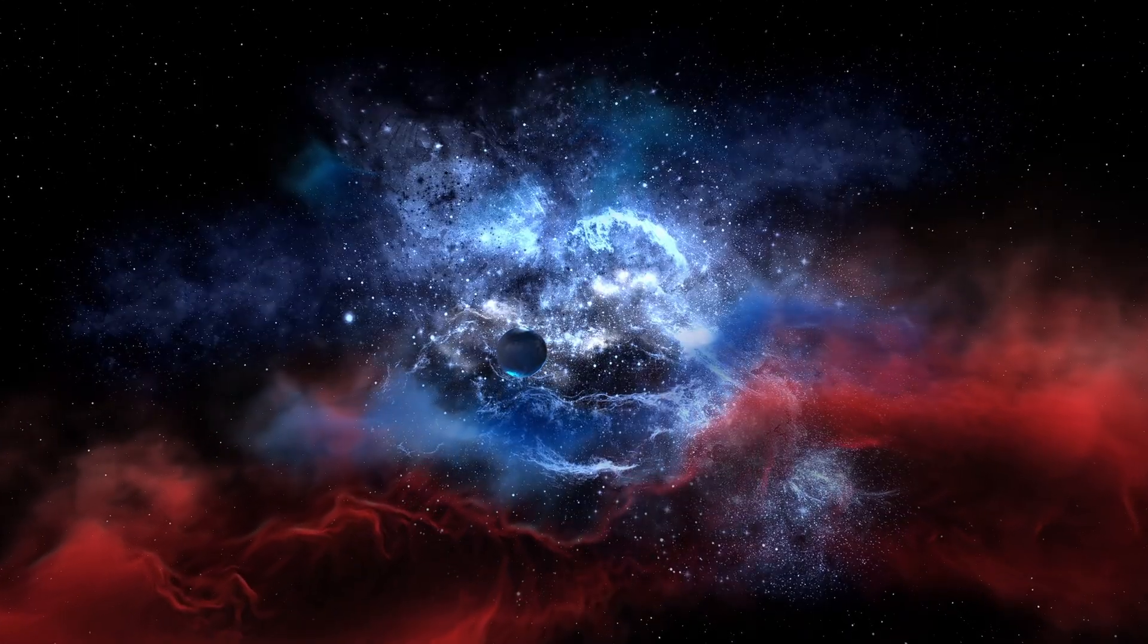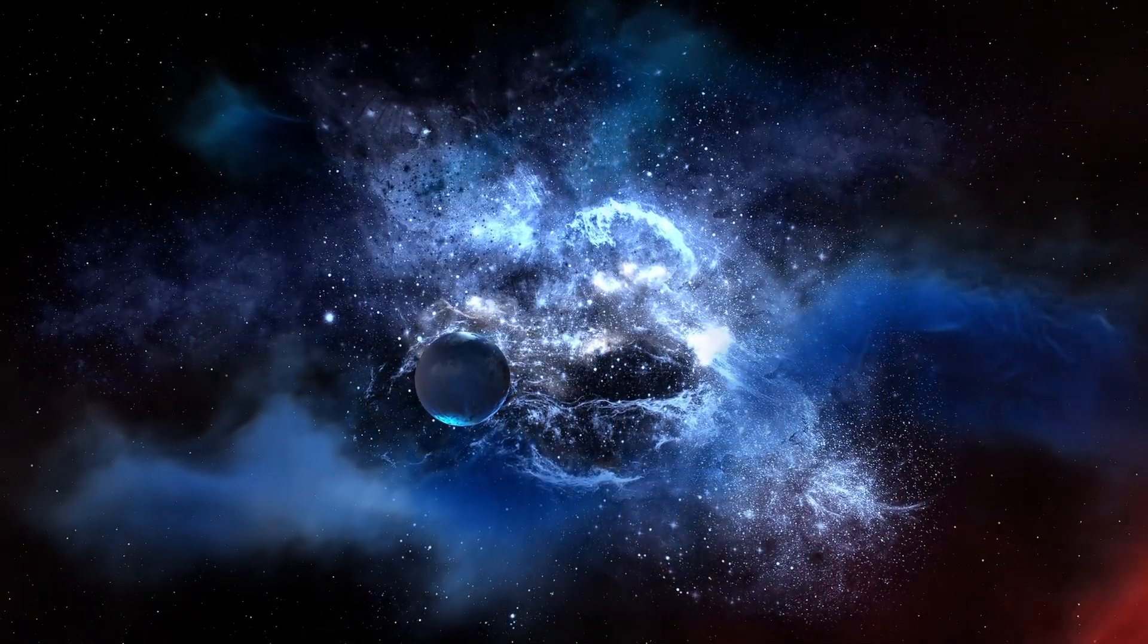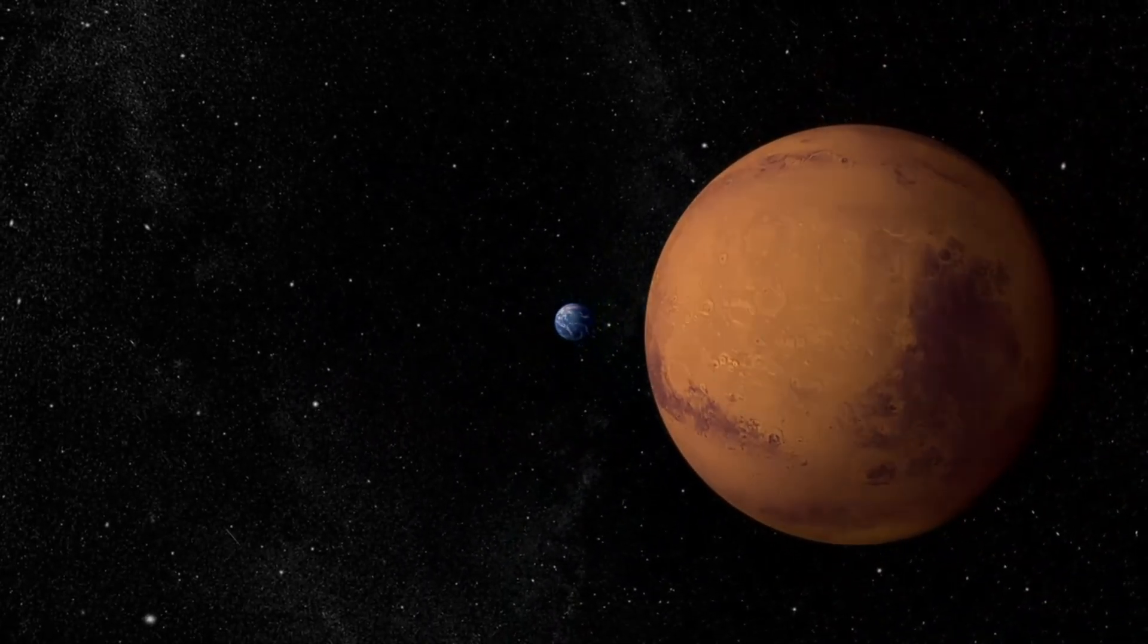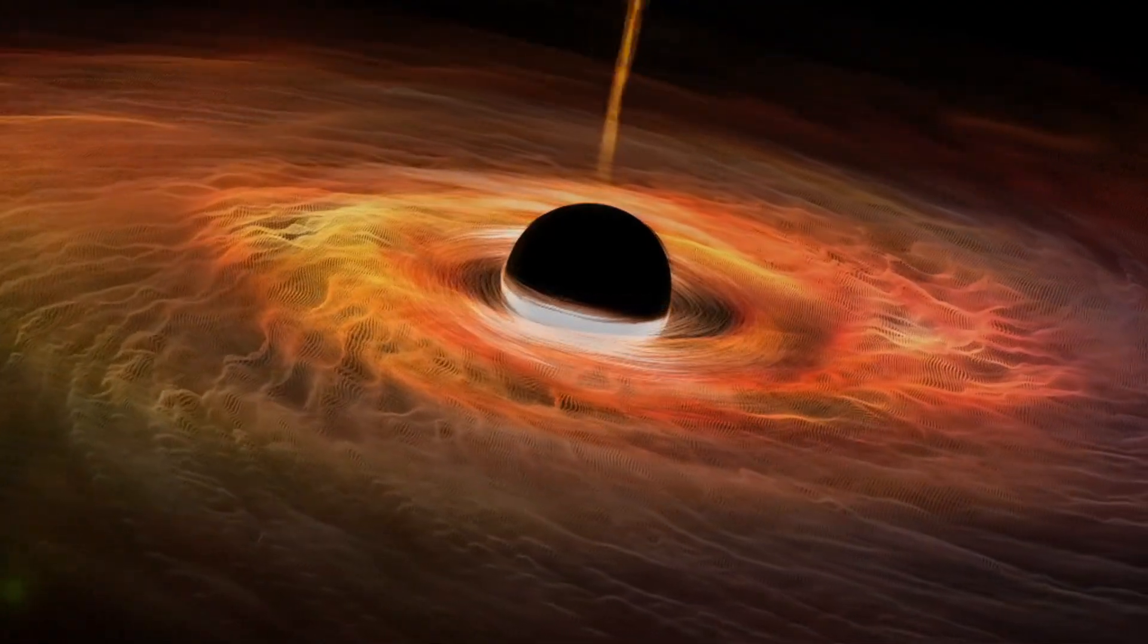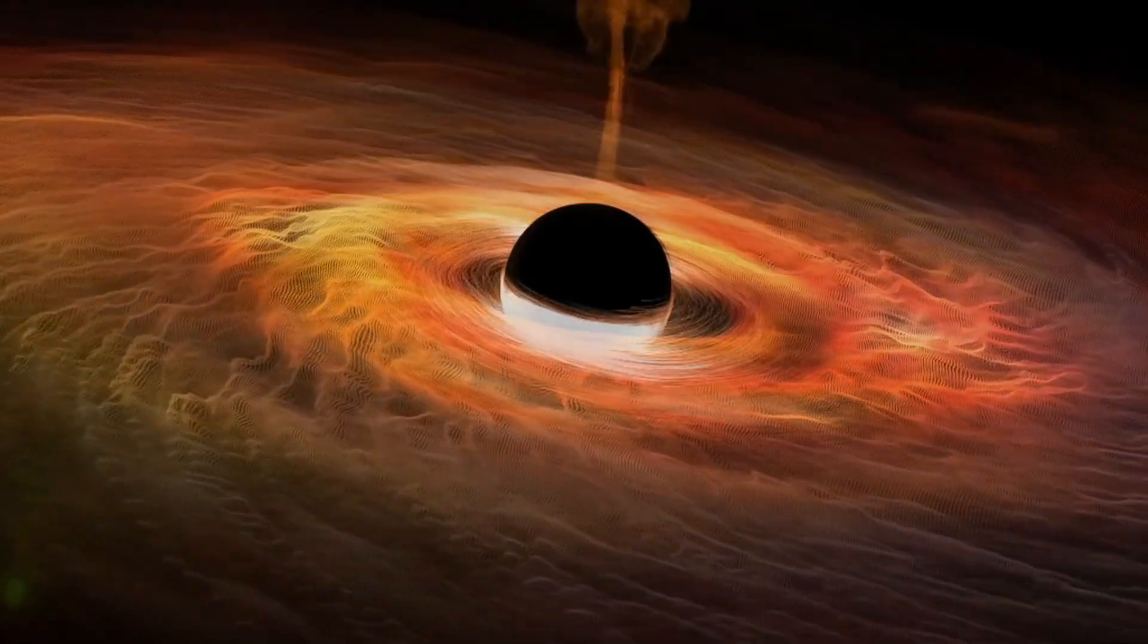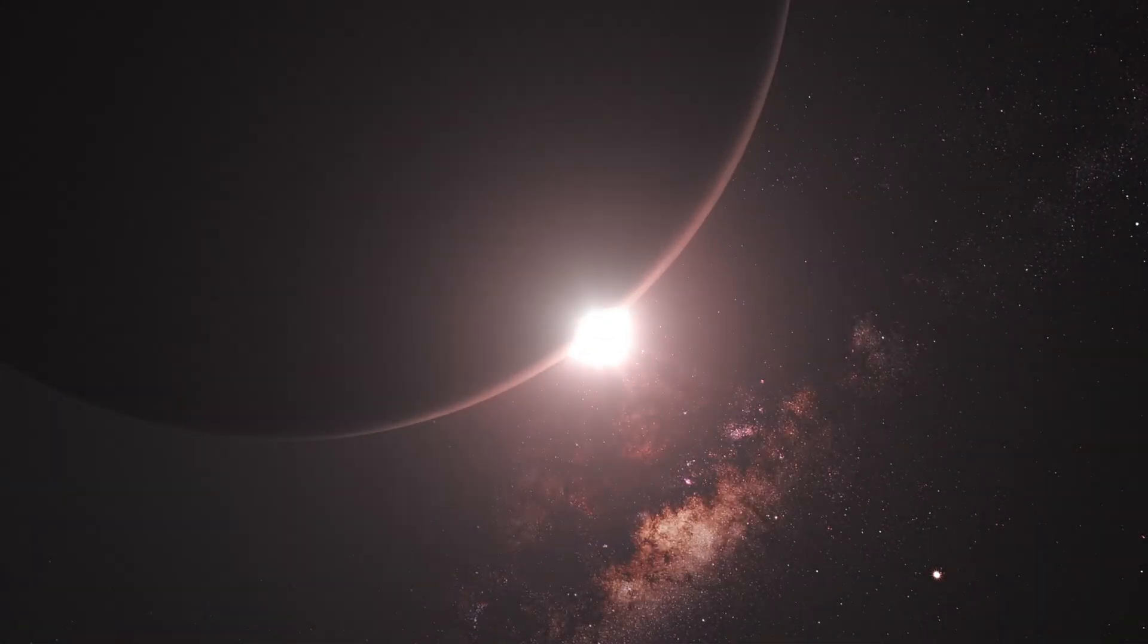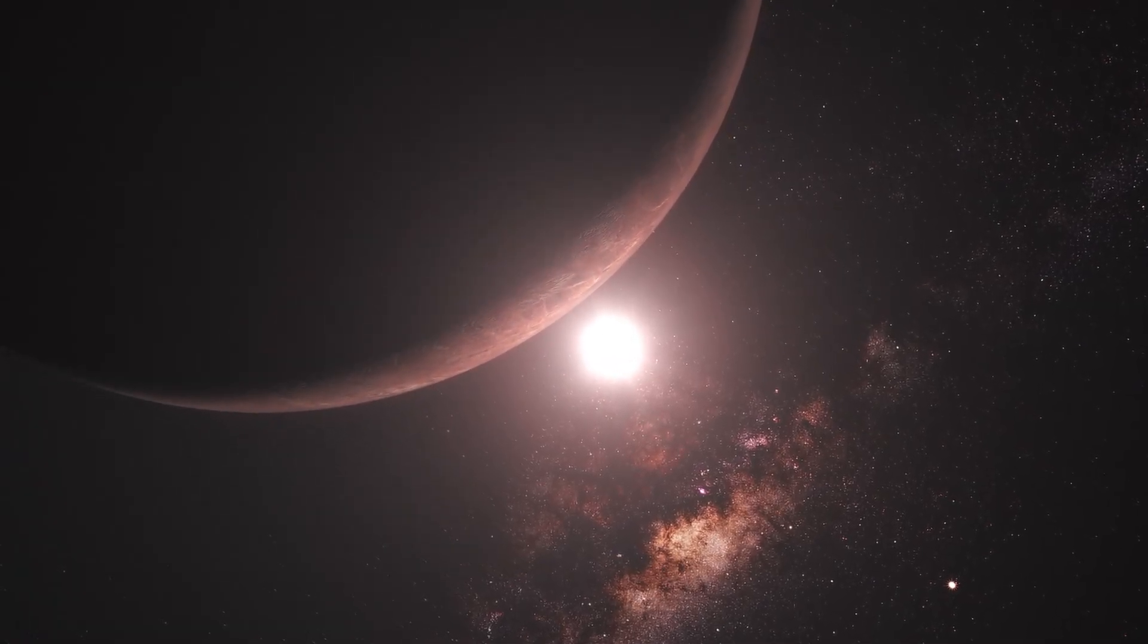To understand why, we must travel back 13.8 billion years, to a universe that was small, hot, and violent. Everything—energy, matter, space itself—was compressed tighter than anything we can imagine. In that chaos, tiny fluctuations could have squeezed bits of matter together with such force that they collapsed into miniature black holes. Many would have evaporated over time. Some might have lasted. Some might be drifting through our galaxy right now, silent and invisible.